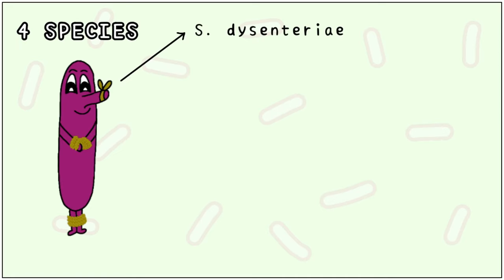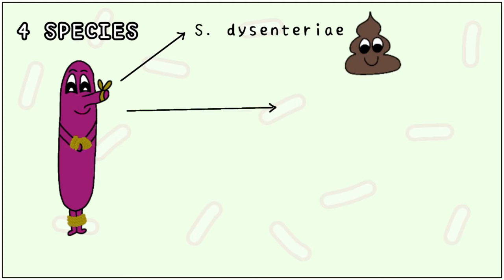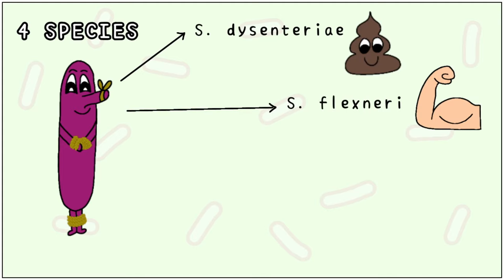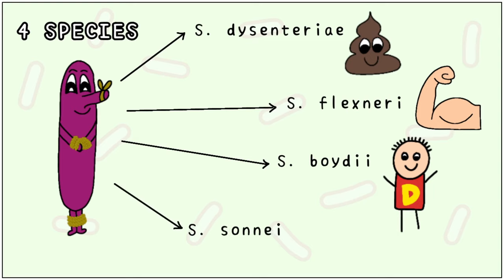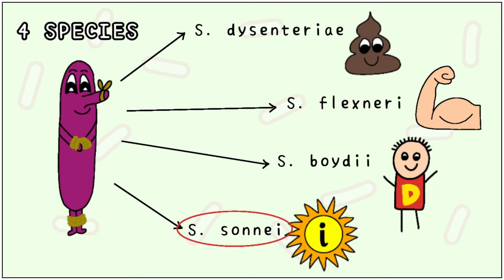Shigella has four subspecies: S. dysenteriae, symbolised by a poop emoji; S. flexneri, symbolised by a flexed muscle; S. boydii, symbolised with a boy and a D; and S. sonnei, symbolised by the sun with an eye. Of these, S. sonnei is able to withstand the most difficult conditions and is common all over the world. However, it is S. flexneri that is the most common in India.